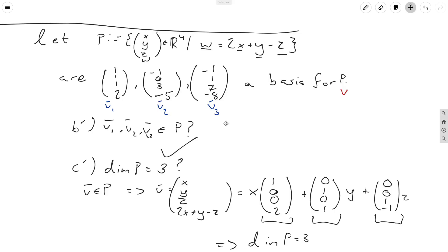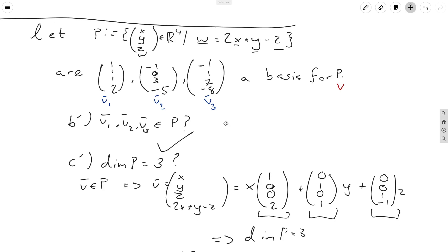Well, first of all, we want to check if v1, v2, and v3 are in P. Remember, that was condition b prime. Now last time that was obvious, but this time it's a little less obvious. We have to check it. Now to check if, say, for example, v1 is in the set, we just need to see whether it matches the definition that vectors have to meet to be in the set. So this says that the fourth coordinate w is equal to 2 times the first coordinate plus the second coordinate minus the third coordinate.